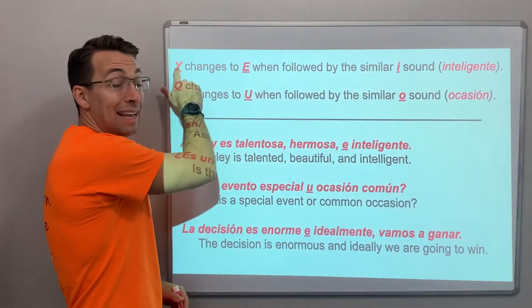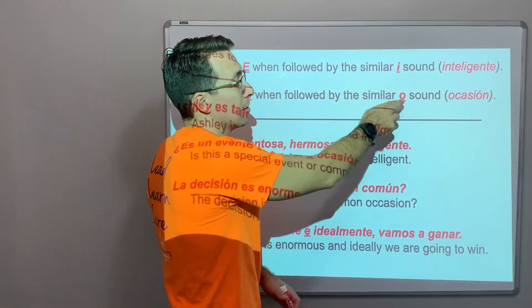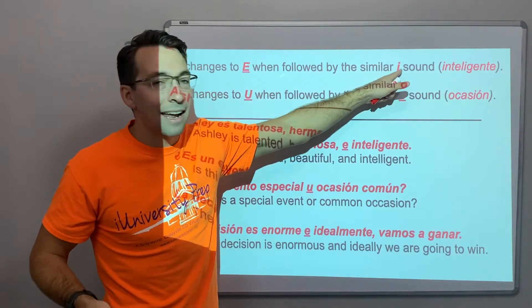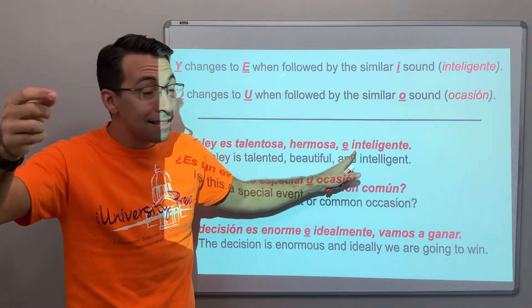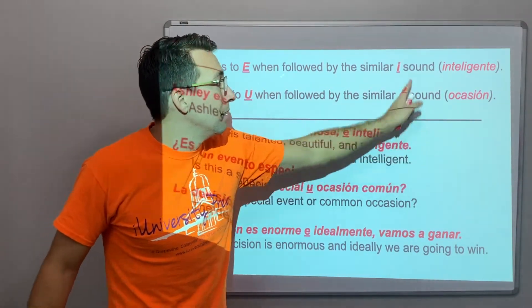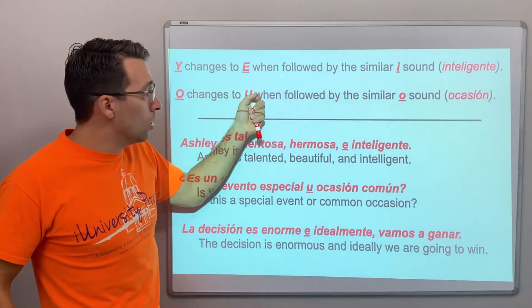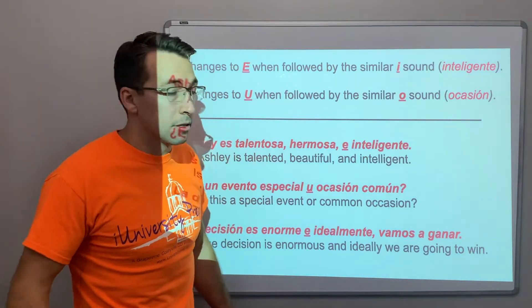All right. So, y changes to e when followed by a similar, in English the letter is i, but in Spanish it's e. And that is an e sound, like inteligente, right? Inteligente, i, intelligent, sound, right? O changes to u when followed by a similar o sound, like ocasión, the occasion.